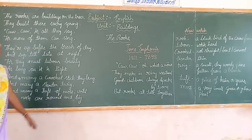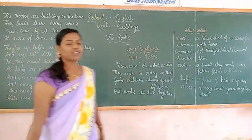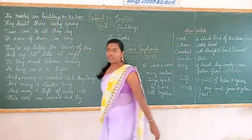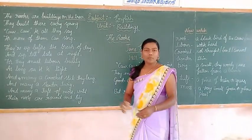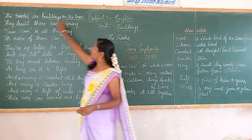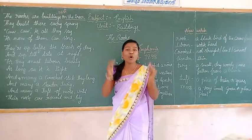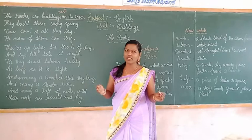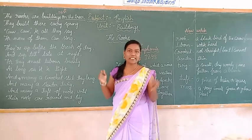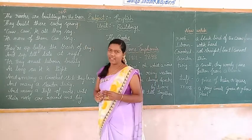The rooks are building on the trees. They build their nests every spring. When the birds build their nest — yes, the birds build their nest on the tree. Here 'building' refers to the nest. The rooks are building on the tree, so 'buildings' here refers to nests. The rooks are a black bird belonging to the crow family, and they build their nests on the tree.